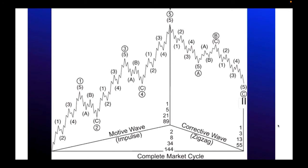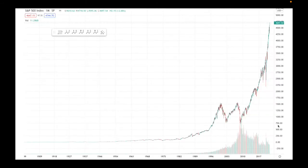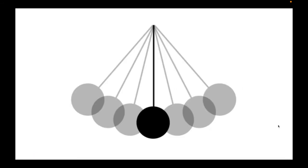Bob Prechter is absolutely outstanding, and I would take what he has to say very seriously — he's written numerous books and has forecast all of the crashes over about the last 20 years. Here is the S&P 500 index — it's looking like a crypto chart, it's exponential. Markets are like pendulums: the more they swing in one direction, the more rapidly and deeply they swing in the other, because they're always swinging around averages. This is the biggest market bubble since the South Sea Bubble in about 1720, according to Bob Prechter.